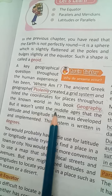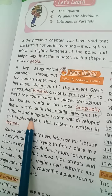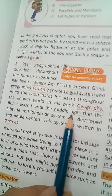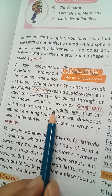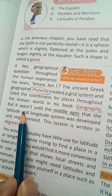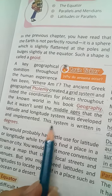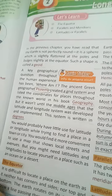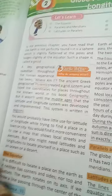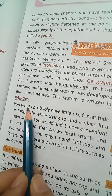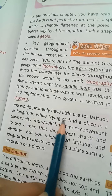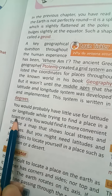But it was not until the middle ages that the latitude and longitude system was developed and implemented. Neither the longitude nor the latitude existed before that. This system is written in degrees.